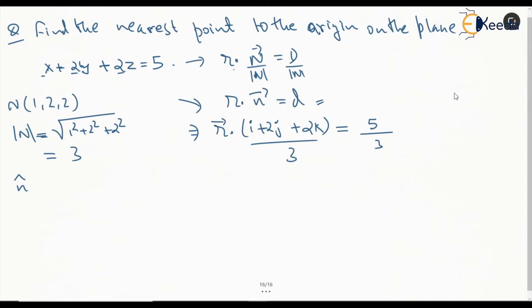Now, we can say this n cap is nothing but 1 by 3 times i plus 2j plus 2k. This normal is actually the normal through the origin. So, in that case, this is now the standard equation. This equation says that this is a plane which is having a normal as i plus 2j plus 2k divided by 3 and it is at a distance of 5 by 3 from the origin.